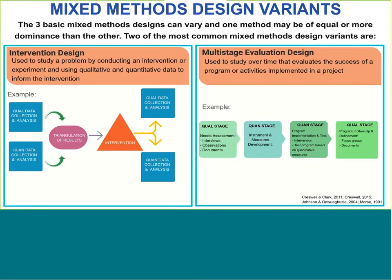We just discussed the three basic mixed methods research designs, but these designs can vary in a number of ways. The first common variation is the intervention design, where you study a problem by conducting an intervention or experiment and using qualitative and quantitative data to inform the intervention. In this example, the design starts with a convergent parallel design, results are triangulated and interpreted to inform the intervention, and after the intervention, quantitative and qualitative assessments are conducted again. You may think of this as a pretest-posttest design that includes both quantitative and qualitative data, where the data is used to inform the actual intervention.